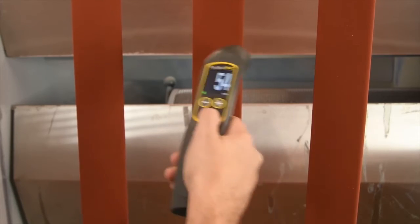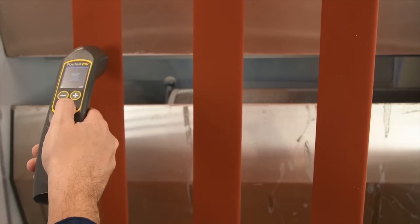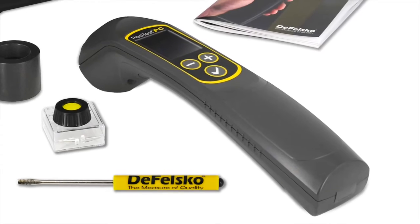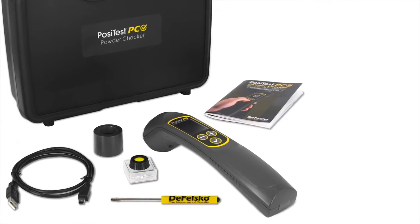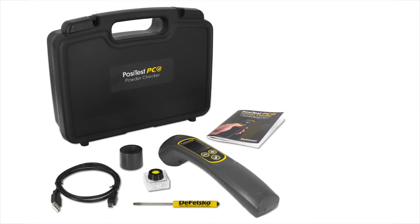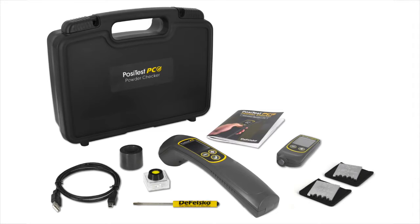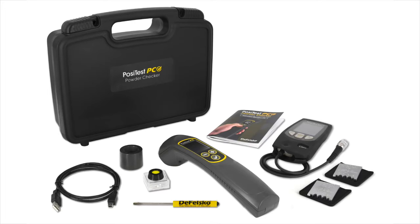The new PosiTest PC features enhanced technology at a significantly lower price. It comes complete with everything required to start taking measurements in a convenient hard shell case. Complete powder inspection kits are available, which also include a PosiTest DFT or PosiTector 6000 dry film thickness gauge for after-cure measurement.